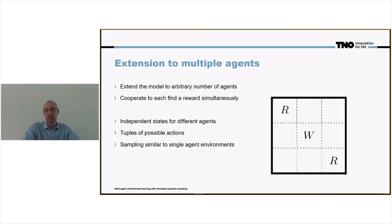The goal for the agents in the grid is to find the two rewards simultaneously. If they do, we get a reward. If they don't, they do not get a reward.